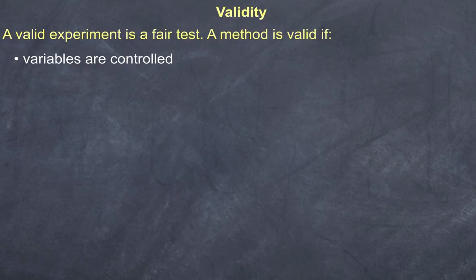Thirdly, something is valid if the variables are controlled. What does that mean? Well, if I'm changing one variable in order to determine the other variable, in other words, I'm changing the independent variable to see the effect on the dependent variable, I need to ensure that any other variables are a constant, because they cannot be changing the results.